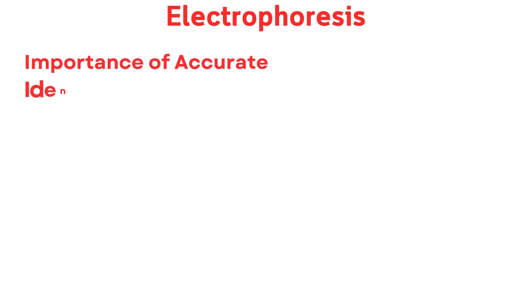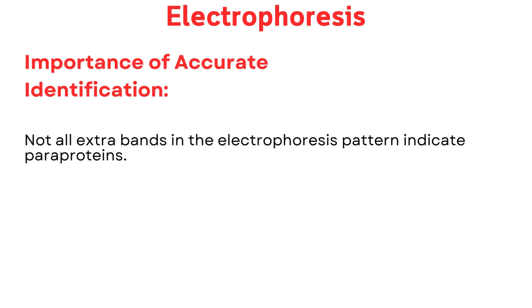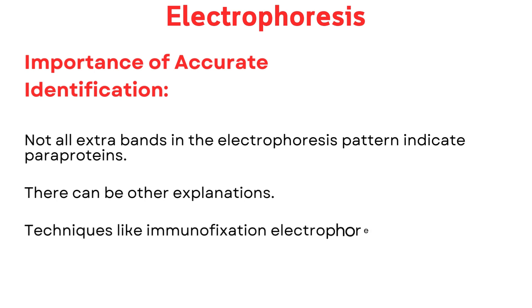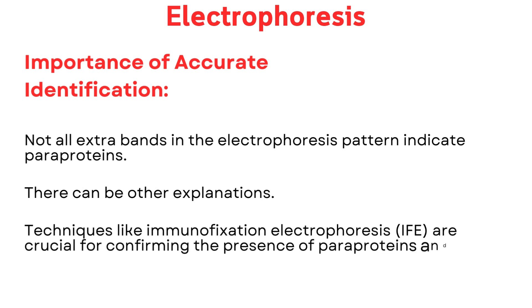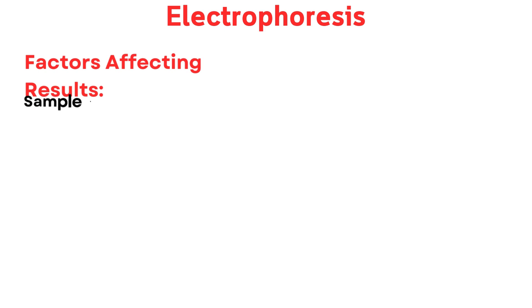Importance of accurate identification: not all extra bands in the electrophoresis pattern indicate paraproteins — there can be other explanations. Techniques like immunofixation electrophoresis (IFE) are crucial for confirming the presence of paraproteins and distinguishing them from pseudoparaproteins. Factors affecting results include sample quality — incompletely clotted blood can introduce fibrinogen, causing interfering bands — and protein variations, where genetic or other modifications can cause proteins like transferrin, haptoglobin (HP), and C3 to migrate differently in the gel.